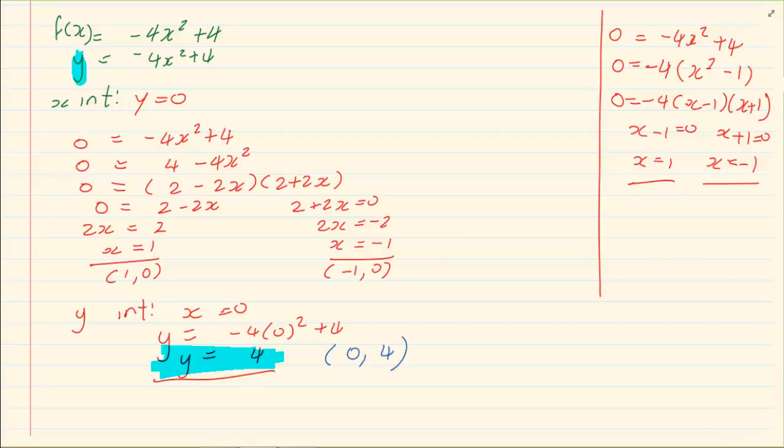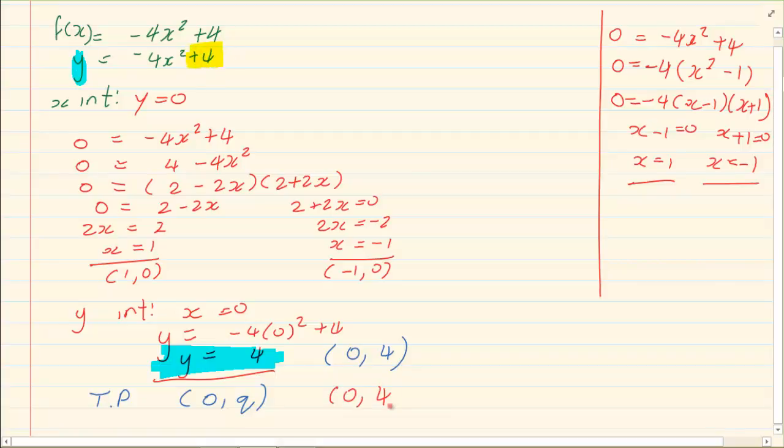Now what is our turning points? Our turning points is 0 and q. Now what is our q? It's 4. So our turning points is 0 and 4.